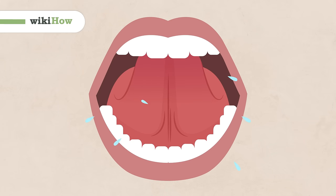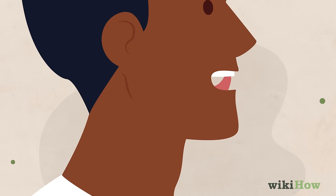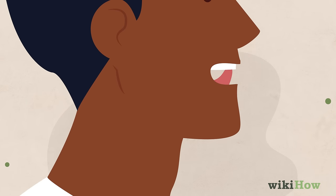Gleeking is when you shoot saliva out from underneath your tongue. People usually gleek on accident, but you can actually make yourself gleek on command.